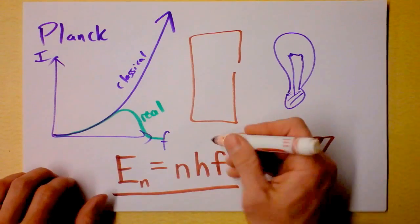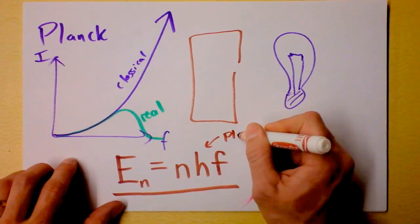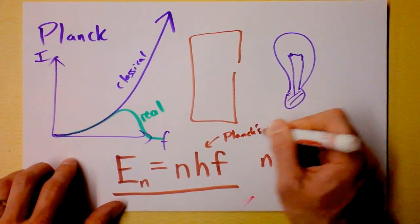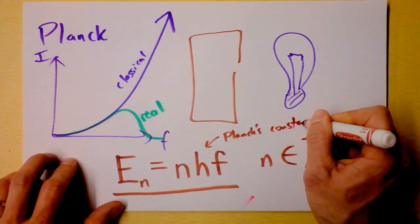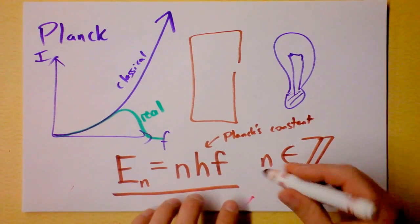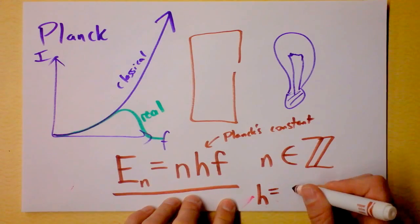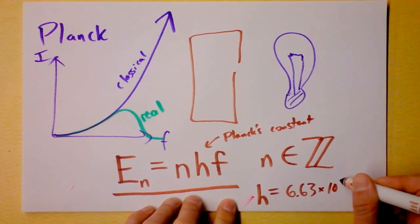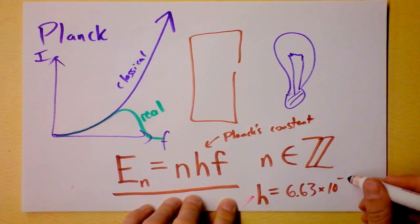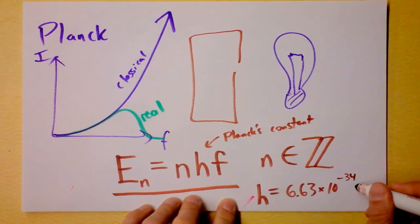But the cool thing is, this h gets to be called Planck's constant. The cool thing about Planck's constant is, it is fantastically small. Planck's constant turns out to be 6.63 times 10 to the negative, get ready, 34th.